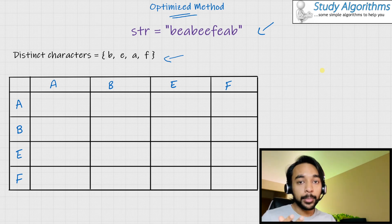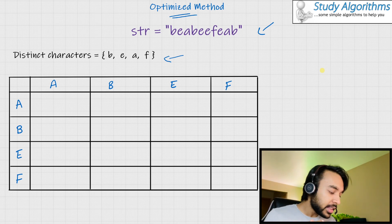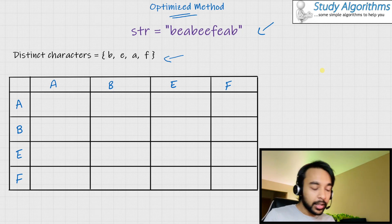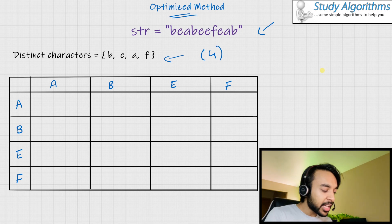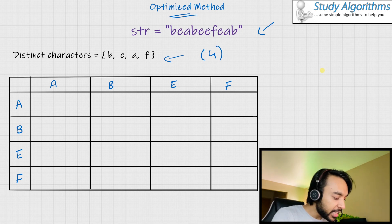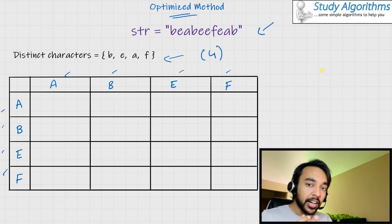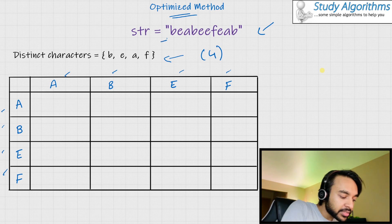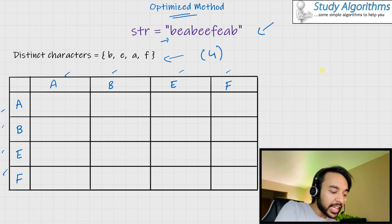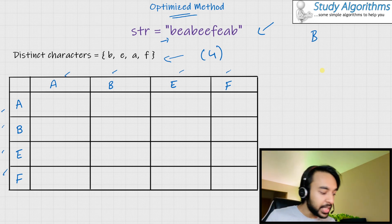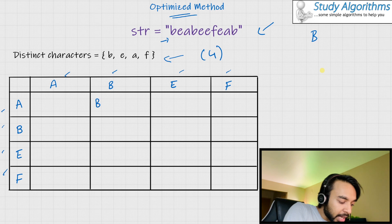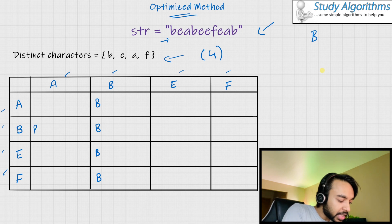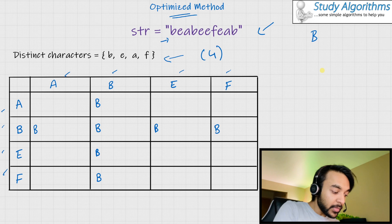What I do here is: I take my string, which is my actual input test case, and I find out all the distinct characters — B, E, A, and F. Then I make a table for an N×N grid. So if the size is 4, I make a table of 4 by 4. Each of the rows and columns represent the different characters that I could find. I need to find a way to keep track of the characters that I am encountering. So let's try to parse the string from the beginning.